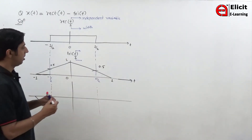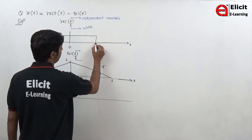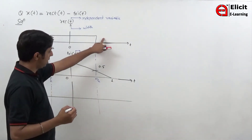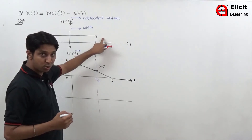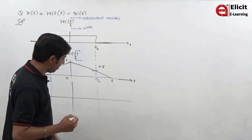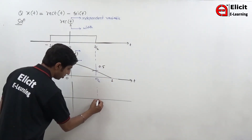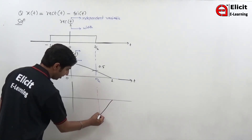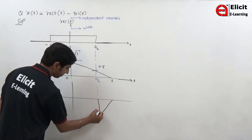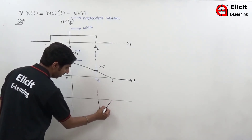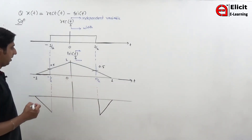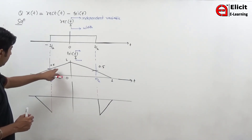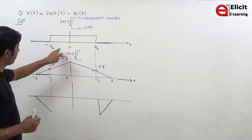Similarly, if you look at the figure at 1 by 2, the value is 0. So when you subtract this signal, the signal will go below. The shape will be like this — the signal will look like this. Now what we have to do is subtract this signal from this signal from minus 1 by 2 to plus 1 by 2.